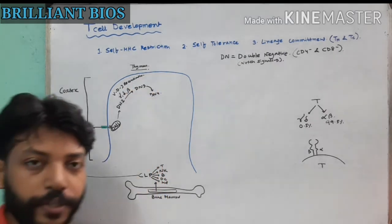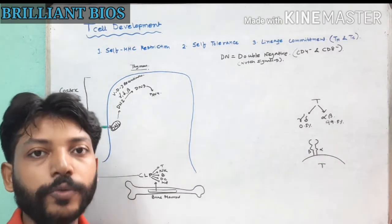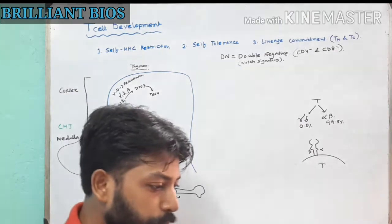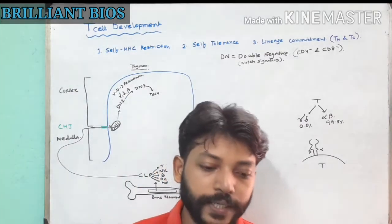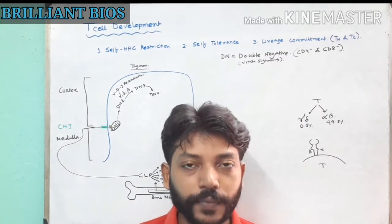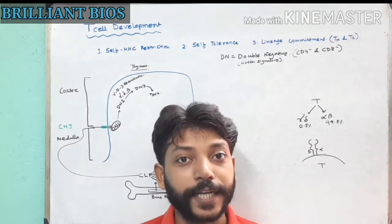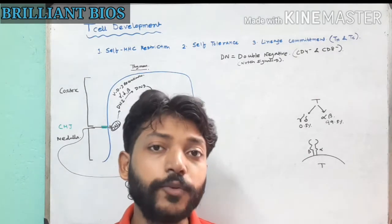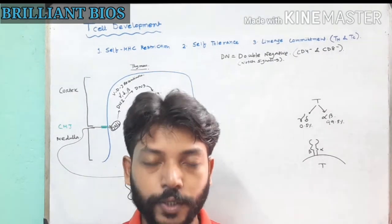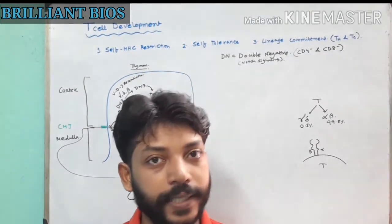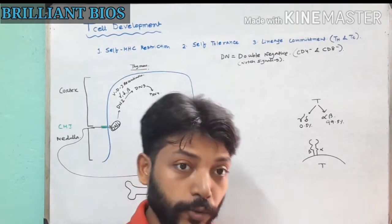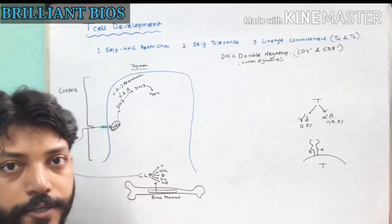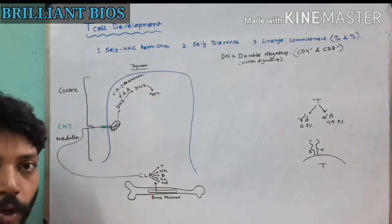T cell receptors also go through VDJ recombination to make a diverse set of T cell receptors. For example, if you have 10 million T cells, you also have 10 million unique T cell receptors, meaning each T cell expresses a unique receptor that can recognize a different antigen. So VDJ recombination produces 10 million unique T cell receptors capable of recognizing 10 million different antigens.